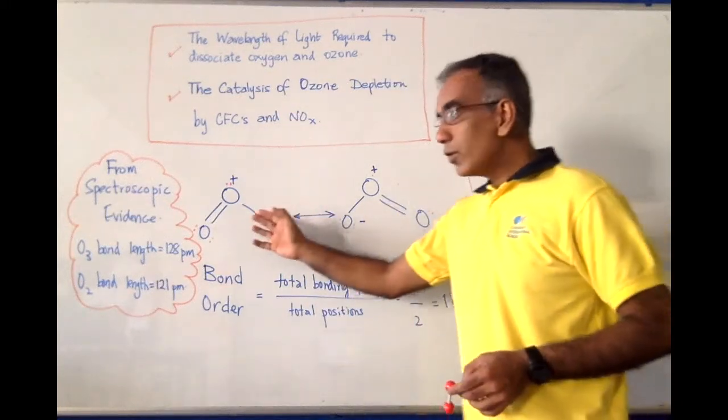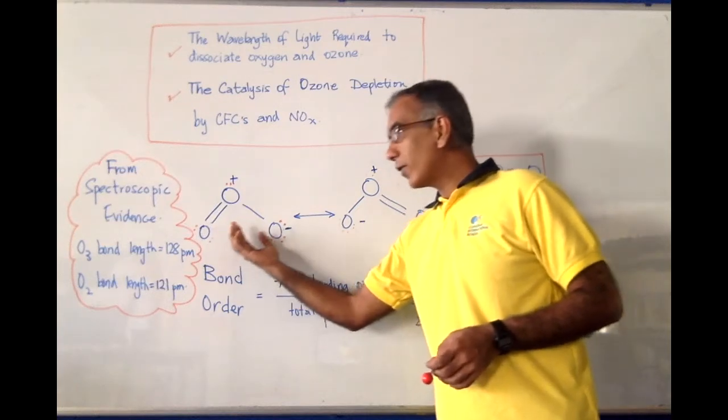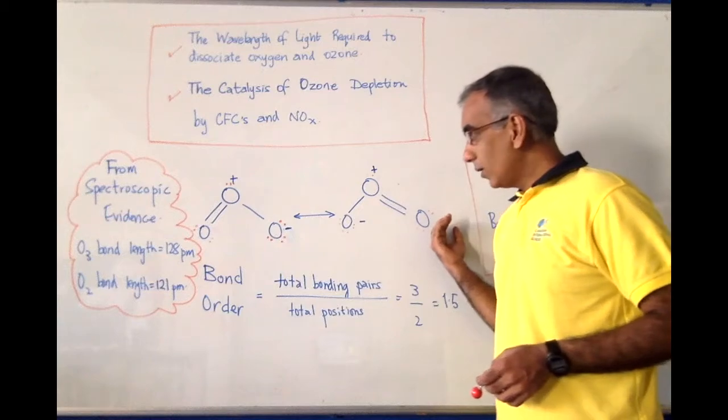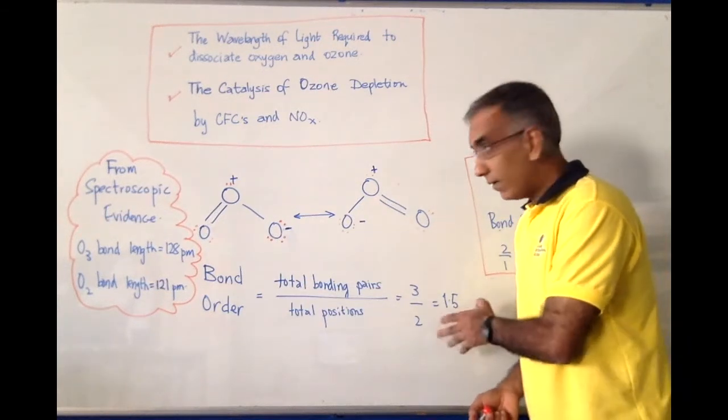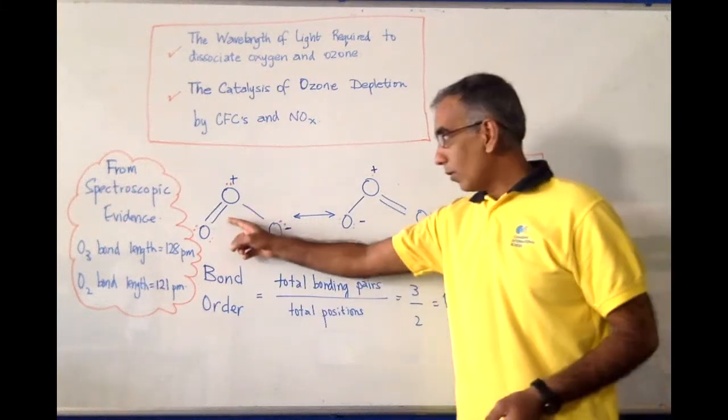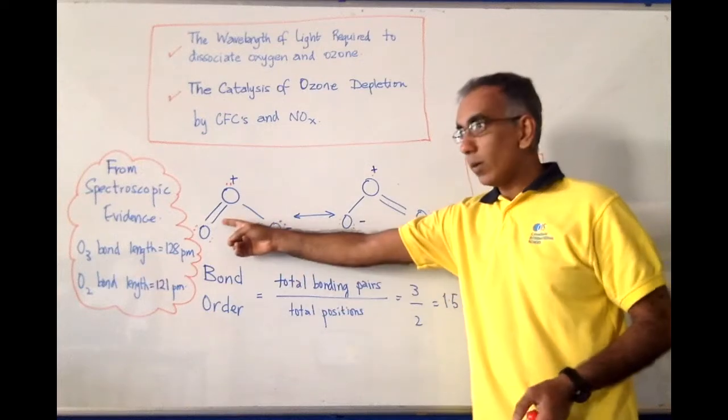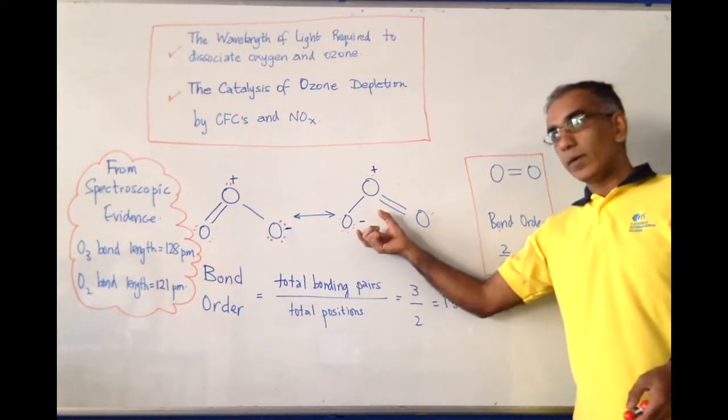And in fact, the true structure of ozone can best be represented as a pair of resonance hybrids with a bond order of 1.5. With the total number of bonding pairs, 1, 2, 3, divided by the total bonding positions, 1, 2, giving a bond order of 1.5 for ozone,